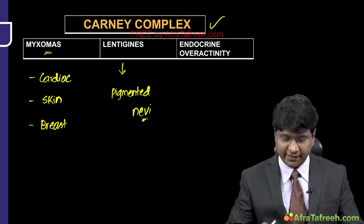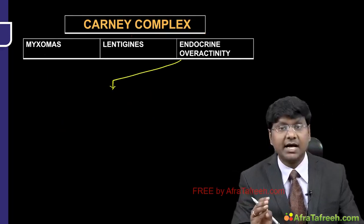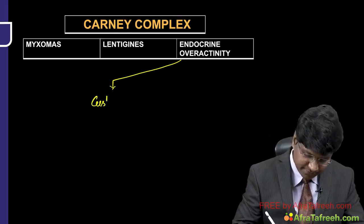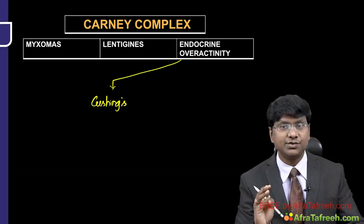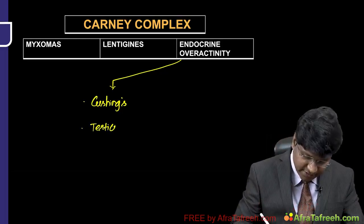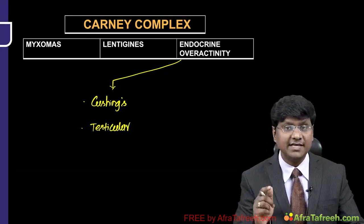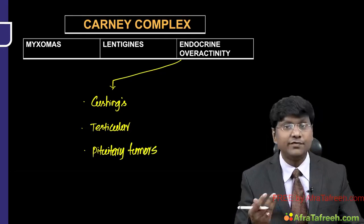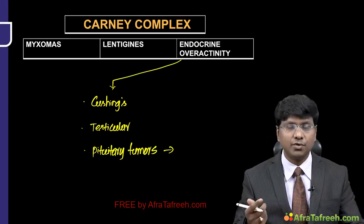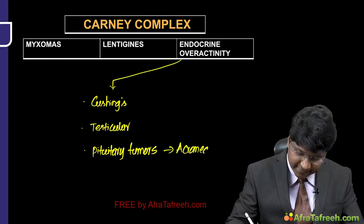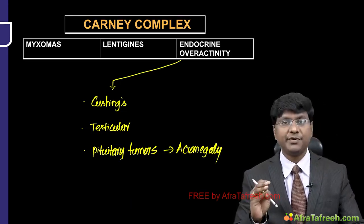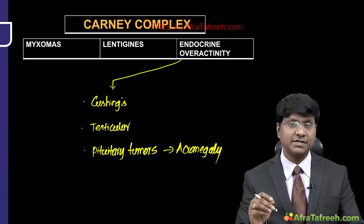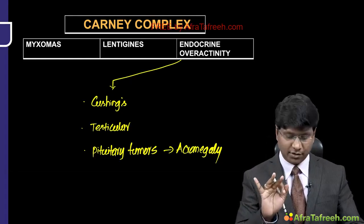The third component of the Carney complex triad is endocrine overactivity — in the form of adrenal cortical hyperplasia causing Cushing's syndrome, testicular tumors in males, and pituitary tumors. These pituitary tumors produce excess growth hormone, causing acromegaly. These pituitary tumors originate from somatotroph cells producing excess growth hormone. This triad — myxomas (cardiac, cutaneous, breast), lentigines/pigmented nevi, and endocrine overactivity (Cushing's, testicular tumor, or pituitary tumor) — defines the Carney complex.